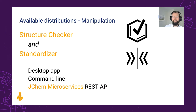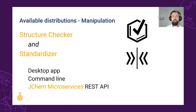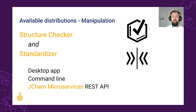StructureChecker and Standardizer give you confidence in the cleanliness of your compound data. While StructureChecker verifies for errors in the chemistry, Standardizer ensures that the representation of your compounds aligns with your organization's business rules, as well as the preferences of the chemists. To complement the classic desktop application and command line tool, we also offer these as modules of the JChem microservices REST API. Of course, they're also integrated into our compound registration application, being a key component of the registration process.